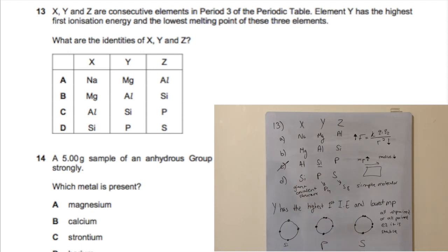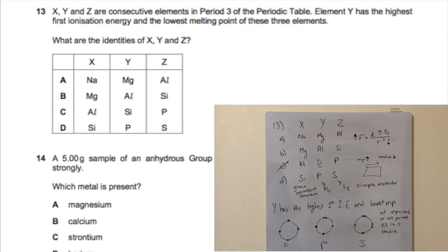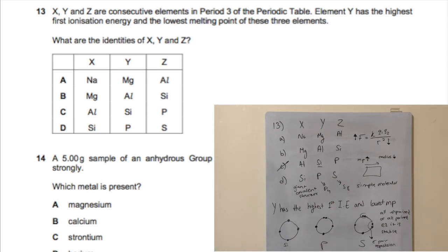Phosphorus has a higher first ionization energy than sulfur despite being to its left because of electron pair repulsion. Sulfur has paired electrons in one of its p-orbitals, and since like charges repel, those paired electrons are easier to remove. The formula sheet confirms phosphorus has the highest first ionization energy compared to sulfur.